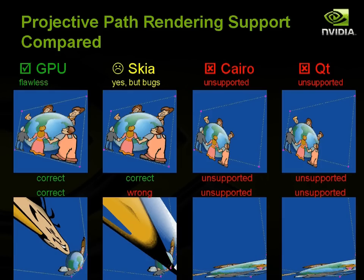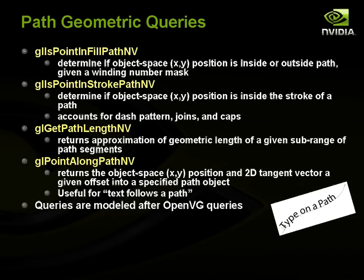Here's a comparison of projective rendering across different path rendering systems — the GPU with NV path rendering is flawless. Skia does support projective path rendering but can get it wrong in some edge cases. Cairo and Qt just don't support it. There's also support for geometric queries in NV path rendering: you can ask if a point is inside a filled or stroked path, get the arc length of a path for different sub-ranges of path segments, and determine where in object space a particular point is at some distance along a path — useful for doing text that follows a path. These queries are modeled on OpenVG, fully consistent with how paths are rendered, and they even work with path styles like dashing.